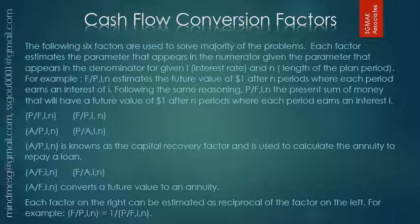A/P(i,n) is known as the capital recovery factor and has widespread use; it is used to calculate the annuity to repay a loan. A/F(i,n) converts a future value into an annuity. Each factor on the right can be estimated as the reciprocal of the factor on the left — for example, F/P(i,n), the factor that converts present to future value, can be estimated as one over P/F(i,n).